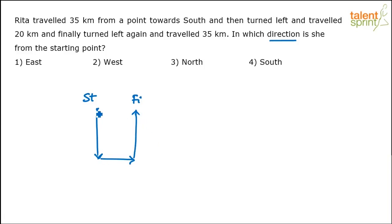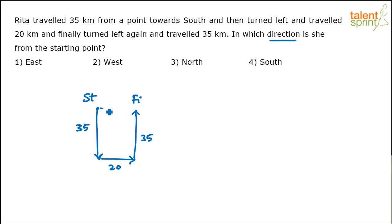Distances are also important because we have to find out from the starting point where she is. This is 35, this is 20, and this is 35. These two distances — 35 going south and 35 going north — are equal. So Rita will come exactly in a straight line towards east of the starting point.